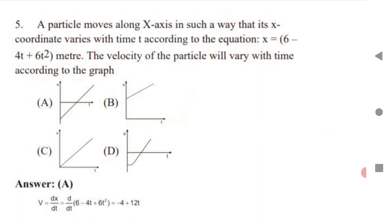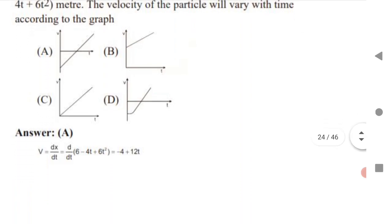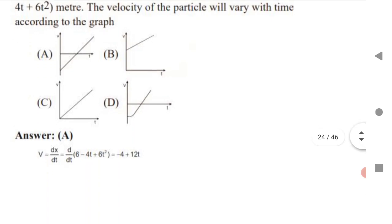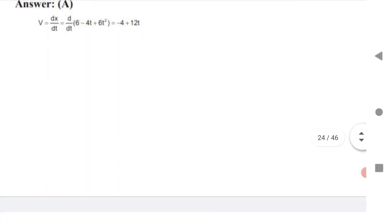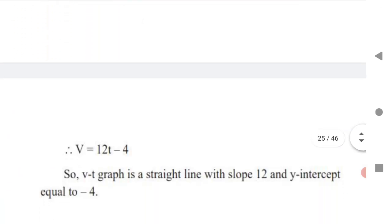Next: a particle moves along the x-axis such that its x-coordinate varies with time according to the given equation. Find how the velocity of the particle varies with time. The velocity formula in a straight line is v = dx/dt. The x equation is given, so just differentiate it and substitute the value of t to get the velocity.